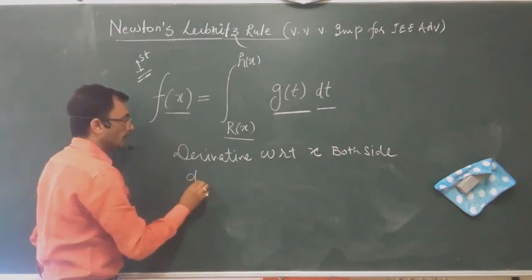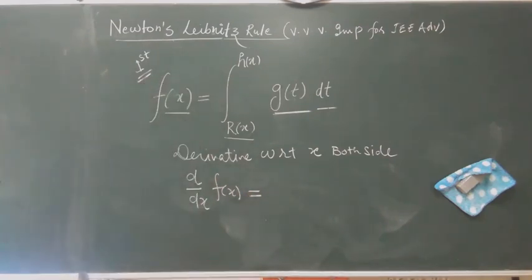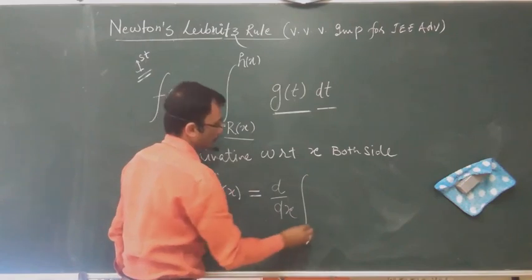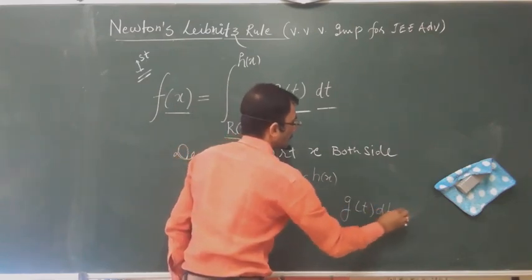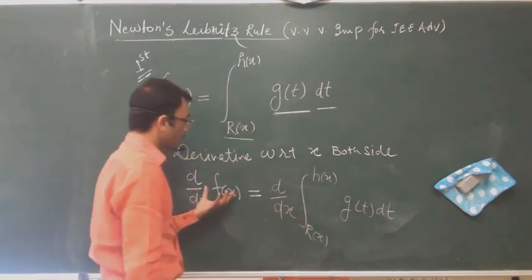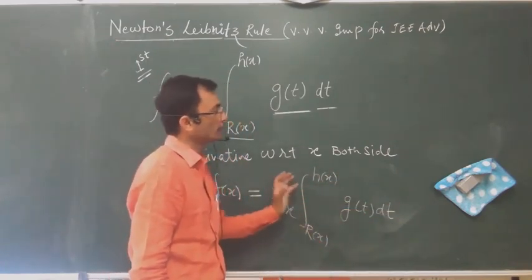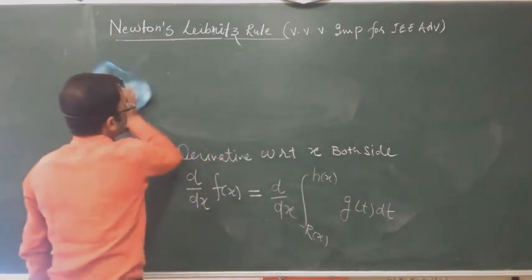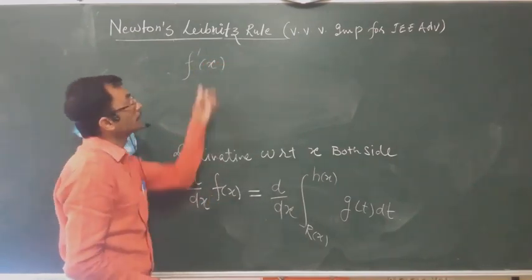So here we use d/dx of f(x) equal to — d/dx of the integral from R(x) to h(x) of g(t) dt. Now let's solve this. We will solve this step by step. Here we will solve f'(x), the derivative — f'(x) is equal to d/dx of this.